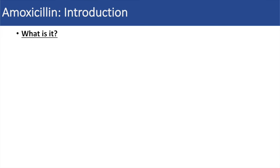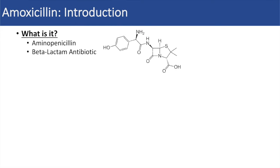So what is amoxicillin? Well, amoxicillin is actually one of the aminopenicillins, and it is a beta-lactam antibiotic. So like all the beta-lactam antibiotics, it actually has a beta-lactam ring.